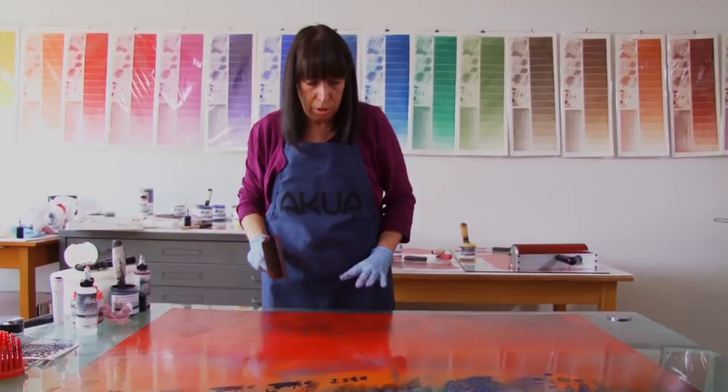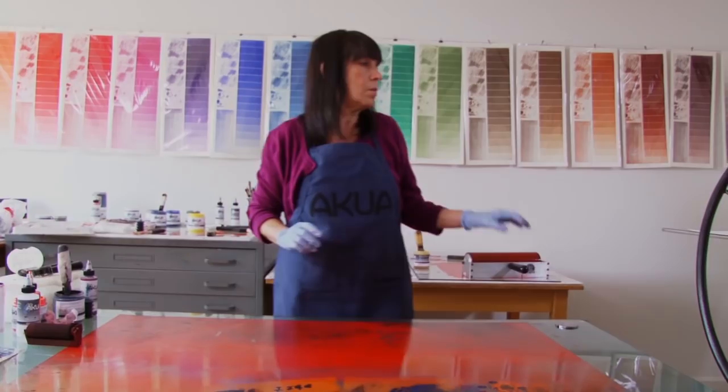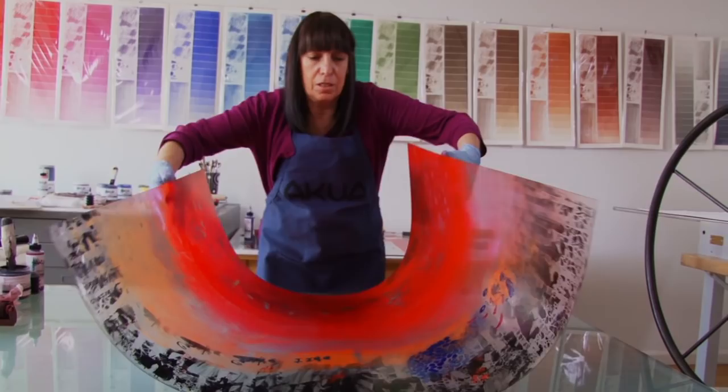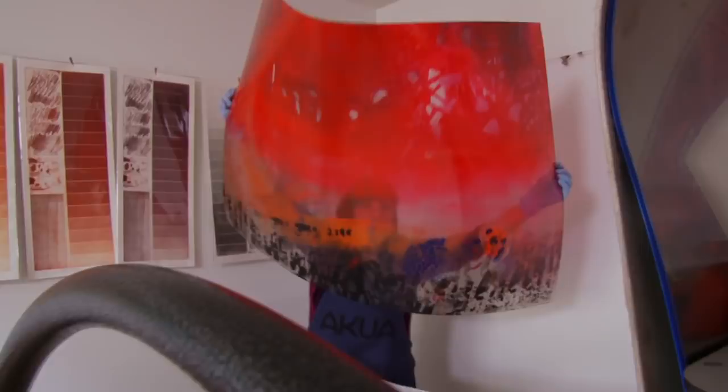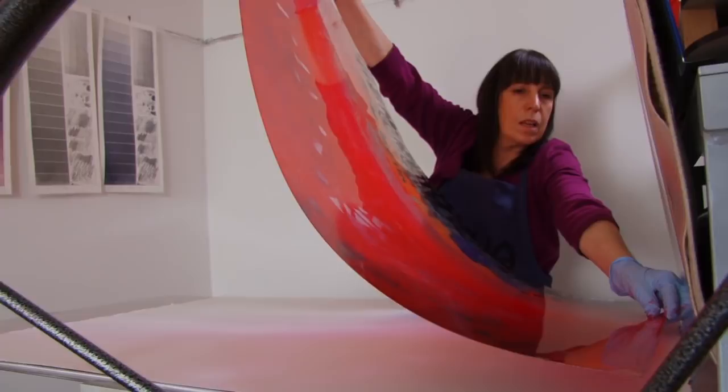My paper is on the press, and I am ready to roll. Because this plate is PETG, and it's very flexible, it is very easy to handle. I'm going to flip it over. It's a great size for me to work, and it fills my press bed. And I'm going to just roll it down like I do paper.